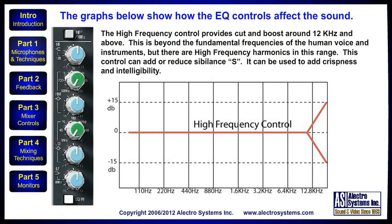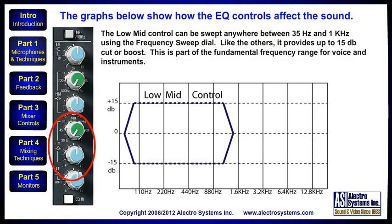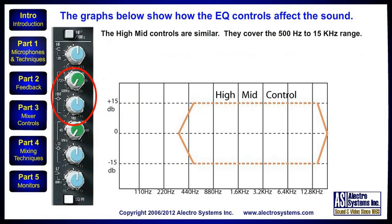The high-frequency control provides cut and boost around 12,000 Hz and above. This is beyond the fundamental frequencies of the human voice and instruments, but there are high-frequency harmonics in this range. This control can add or reduce sibilance, and can be used to add crispness and intelligibility. The low-mid control can be swept anywhere between 35 Hz and 1,000 Hz using the frequency sweep dial, providing up to 15 dB of cut or boost. This is part of the fundamental frequency range for voice and instruments. The high-mid controls are very similar, covering the 500 Hz to 15,000 Hz range.